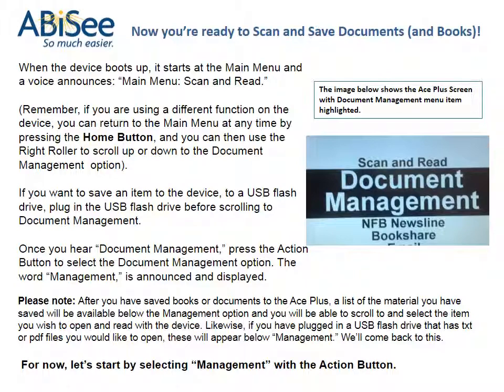When the device boots up, it starts at the main menu and a voice announces main menu, scan, and read. You can return to the main menu at any time by pressing the home button, and then use the right roller to scroll up or down to the document management option. If you want to save an item to the device or to a USB flash drive, plug in the USB flash drive before scrolling to document management. Once you hear document management, press the action button to select it. The word management is announced and displayed.